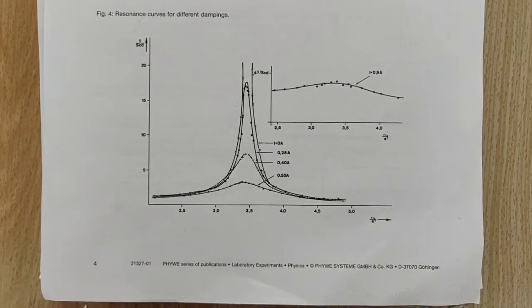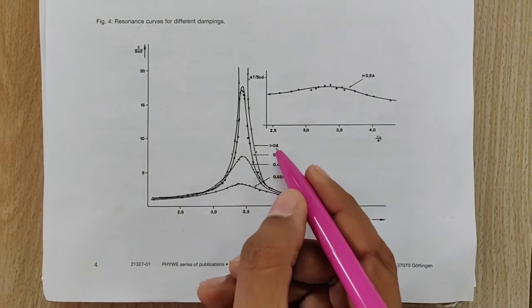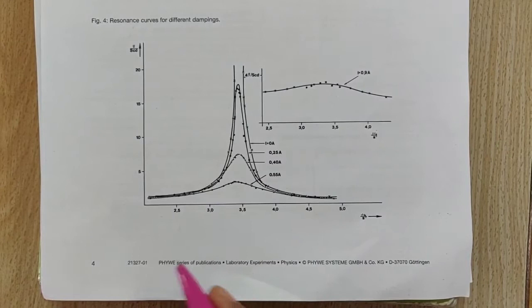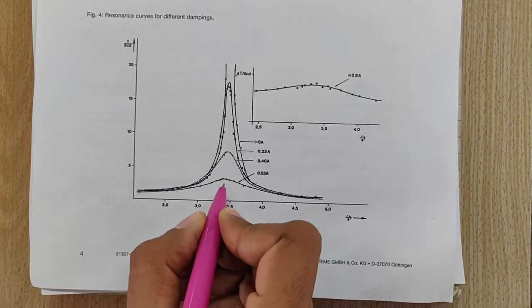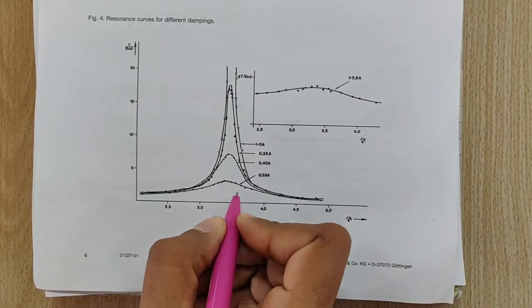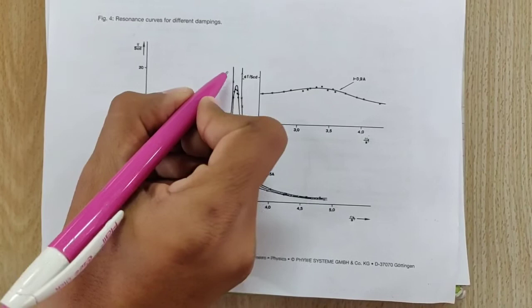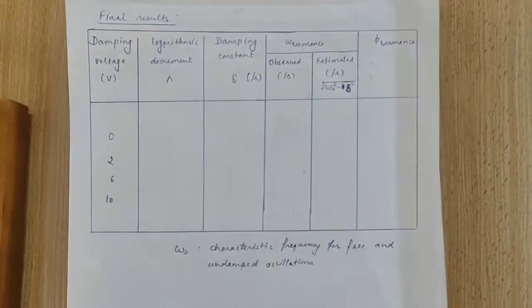This is the characteristic graph, which is basically the resonance curves corresponding to different dampings. We can see the different resonance curves corresponding to different values of damping or applied voltage. The graph corresponding to the minimum value of maximum amplitude corresponds to the highest value of potential difference. As we decrease the potential difference — that is, as we decrease the damping — the maximum amplitude at the resonance frequency starts increasing. This is particularly the case for undamped oscillations, where we achieve a very large value of maximum amplitude at the resonance frequency.